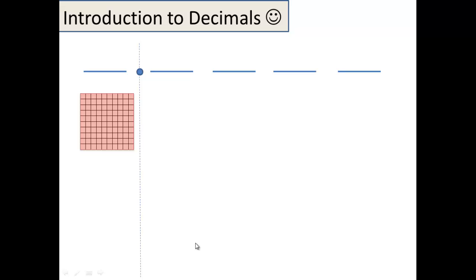Let's start with that whole. Here's a whole. We know we're in the ones place, and we like to call that — we refer to that as the box. So if you're in the ones place, that's one box. There's your one. We're going to talk about fraction form and decimal form, so don't freak out that these are both ones — they're going to change shortly.